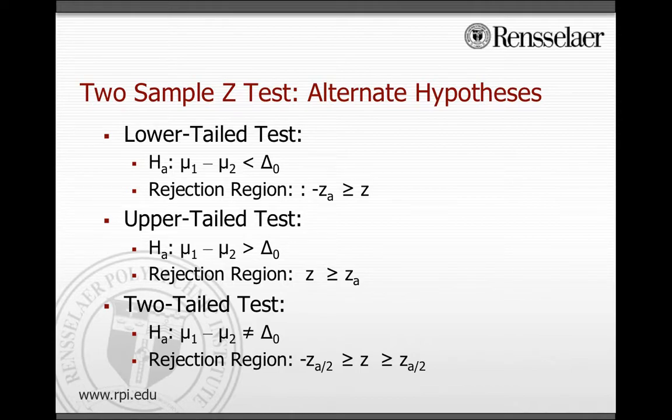You can see the different alternate hypotheses here and their respective rejection regions, which are calculated or the bounds of which are denoted by the critical values z_α or z_α/2.